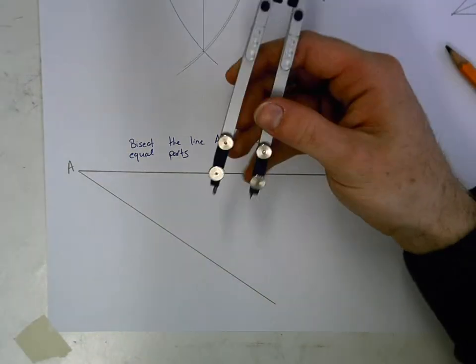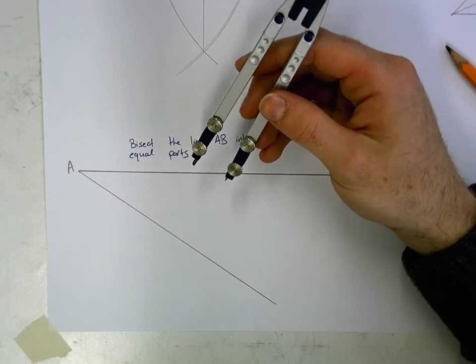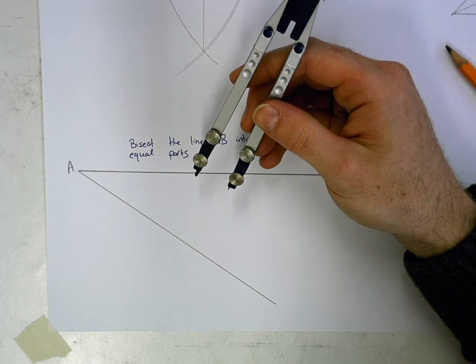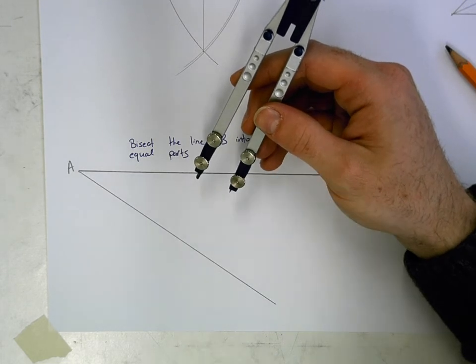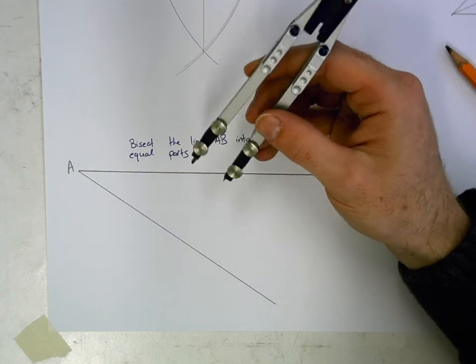We're then going to take our compass. This is a very important step. We're going to take our compass and we're going to set it to a random distance. The distance doesn't matter, but what does matter is that it doesn't change. So whatever you choose, make sure it stays the same.